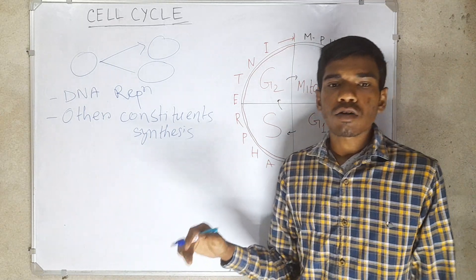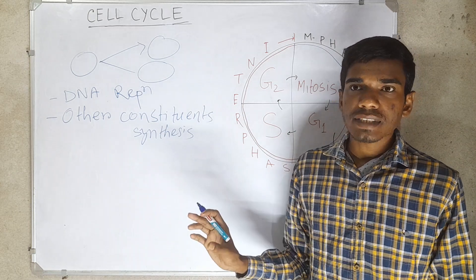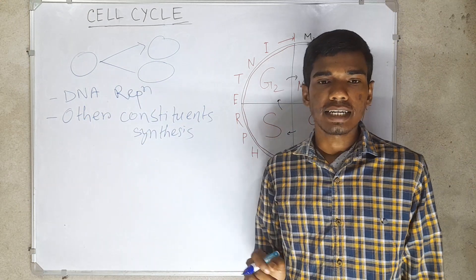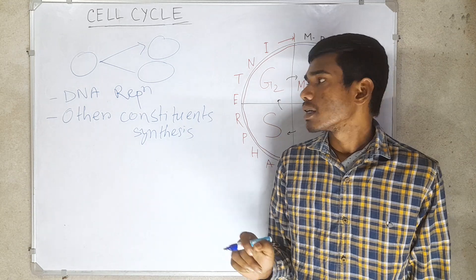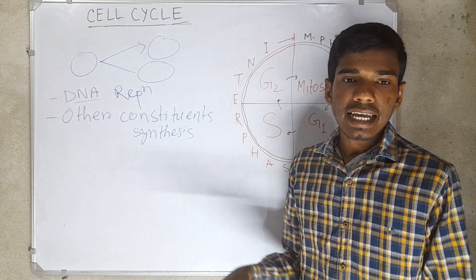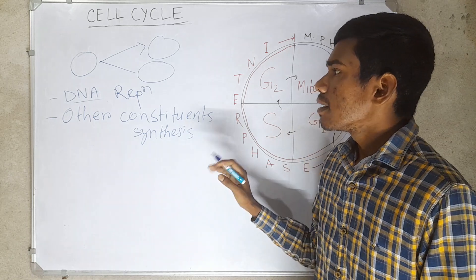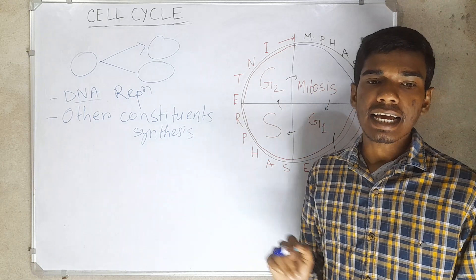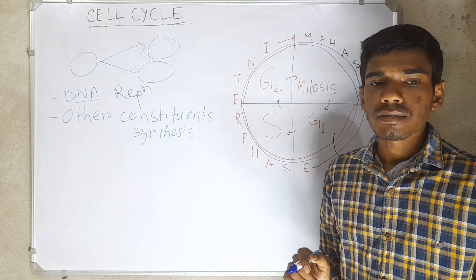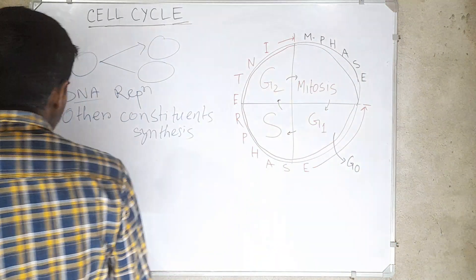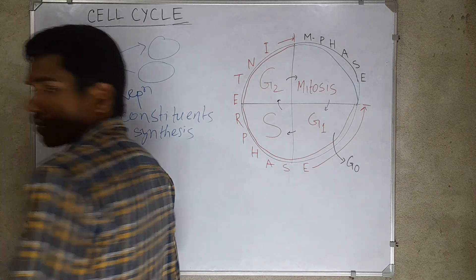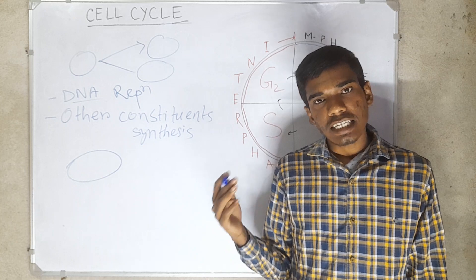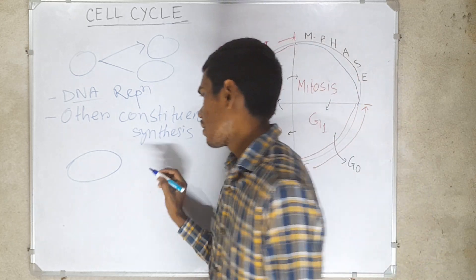Cell growth is an uninterrupted process — that means the cell grows continuously. But DNA synthesis or DNA replication occurs in a specific stage of the cell cycle. By DNA replication, the replicated chromosomes are transferred to the daughter cell from the parent.